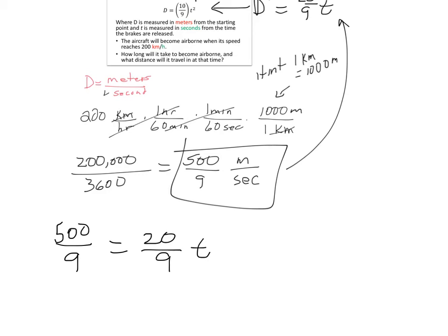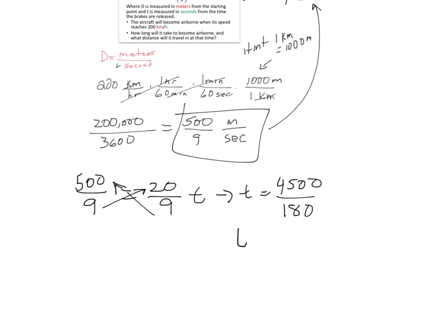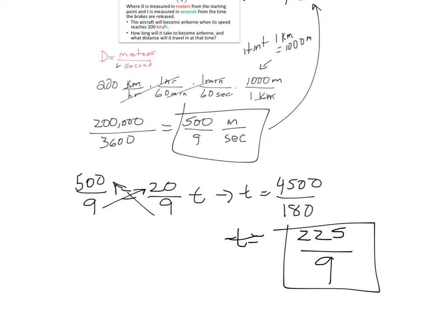Cross-multiplying gives t equals 4,500 over 180, which reduces. That's the time in seconds — the answer MyMathLab wants left as a fraction. If MyMathLab doesn't tell you to round, leave it as a fraction. That's how long it takes for the aircraft to become airborne.